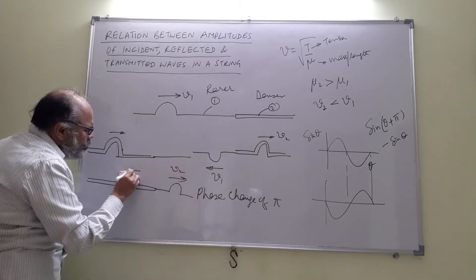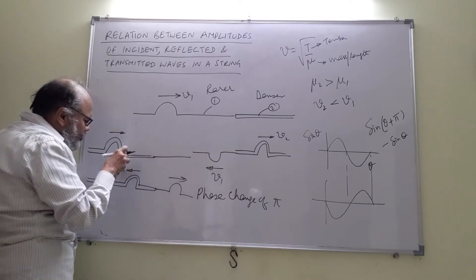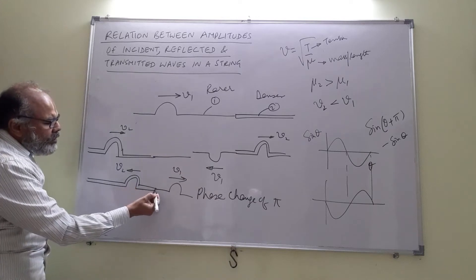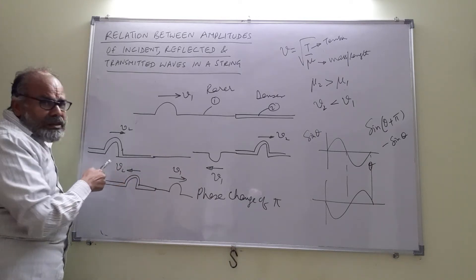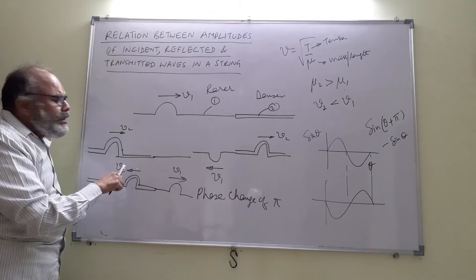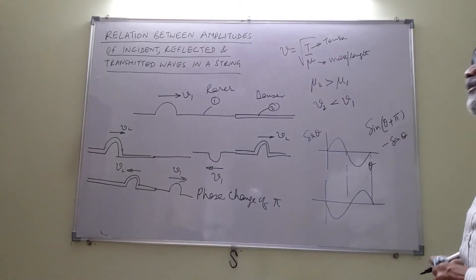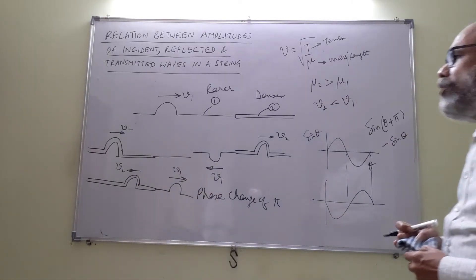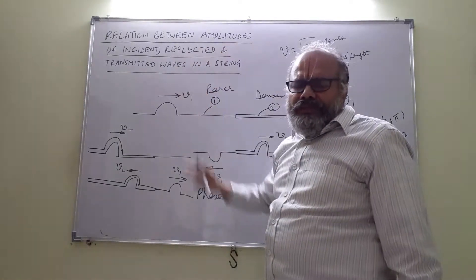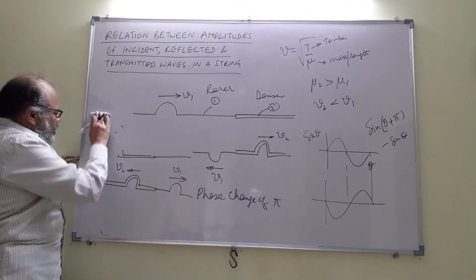There is no phase reversal of π when the incident pulse is in a denser medium — here v2 — and it is getting reflected at the boundary of a rarer medium — here v1. The reflected pulse does not get inverted. We shall now try to see how the amplitudes of the incident, reflected, and transmitted waves are related for a harmonic wave. Here we showed a pulse; let us now take a harmonic wave.